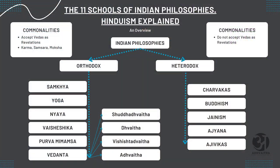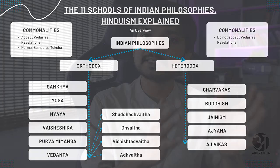Within the Orthodox schools of philosophies, which we will be focusing on, there are six philosophies, and Hinduism as it is today mostly comes from these. The six are: first Sankhya, second Yoga, third Nyaya, fourth Vaisheshika, fifth Purvamimamsa, and sixth Vedanta. These six philosophies accept Vedas as the ultimate knowledge. The five heterodox philosophies are Jainism, Buddhism, Charvakas, Ajnana, and Ajivika, who do not accept Vedas as the foundation.